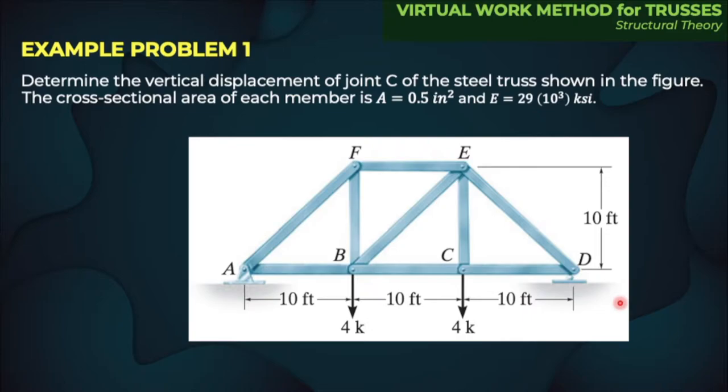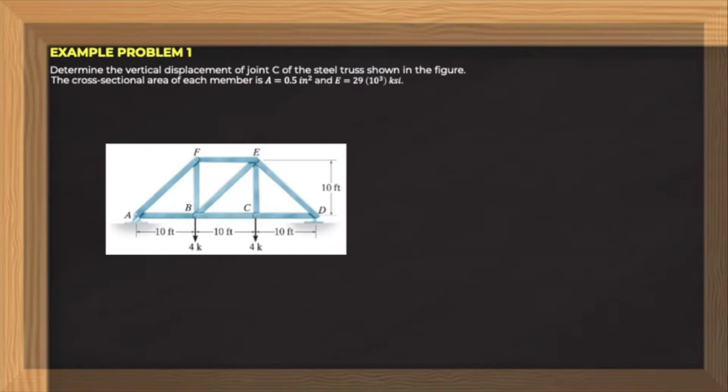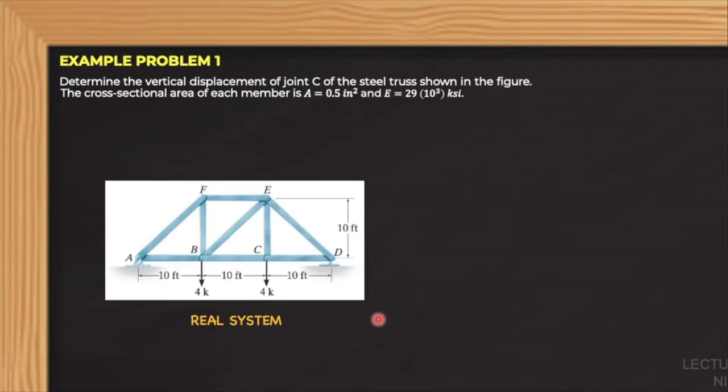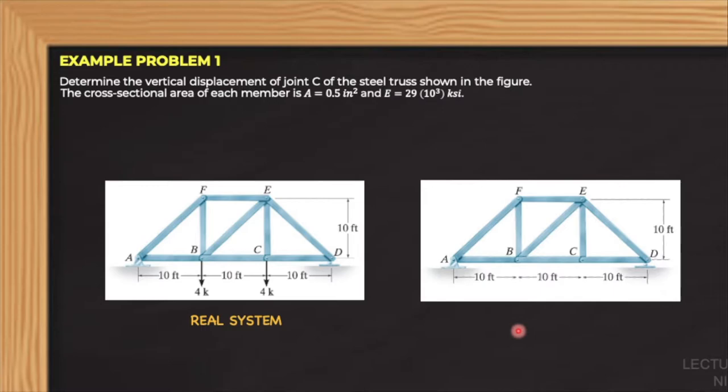The given truss will be our real truss, or what we call the real system. To solve this problem using the virtual work method, we should make another truss called a virtual truss where the external loads in the real truss are removed. So the two four-kip loads at joints B and C are removed in this virtual truss.